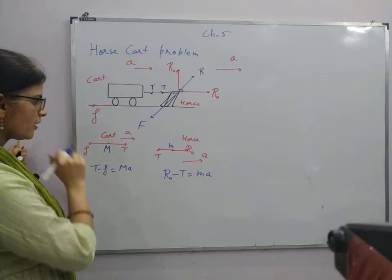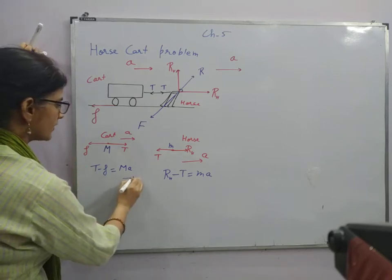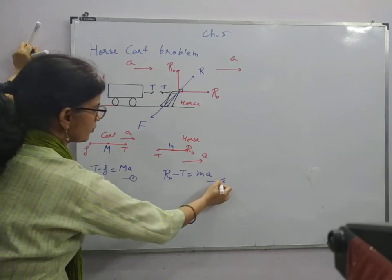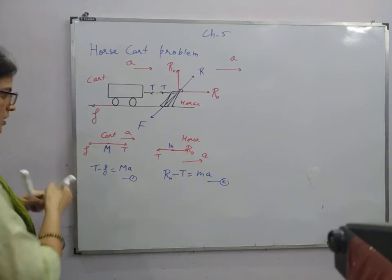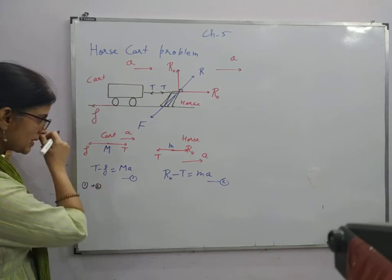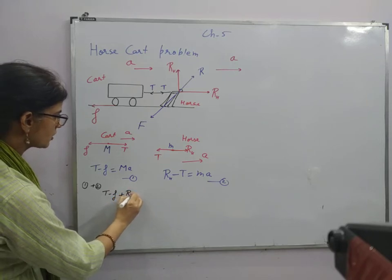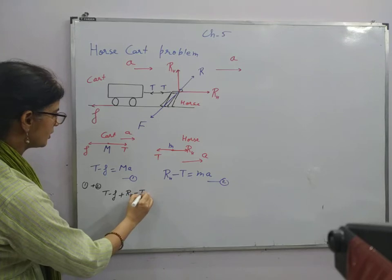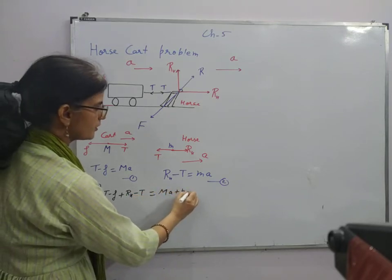So from here I can add these two. If I get this as one, this as two, I'll add these two to get the final result. That is T minus F plus RH minus T is equal to M A plus small m into A.